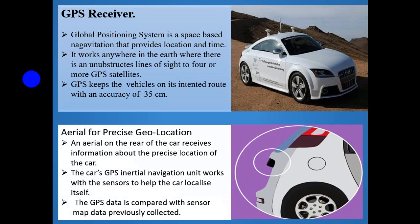GPS Receiver. It is most important to know the position of the vehicle on the road to follow the required path. The GPS receiver, or Global Positioning System, is a space-based navigation system that provides location and time. It works anywhere on Earth where there is a line-of-sight connection to four or more GPS satellites. GPS gives the vehicle its intended route within an accuracy of 35 cm.